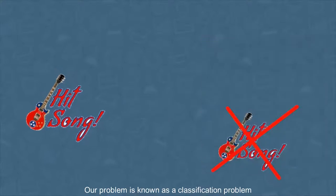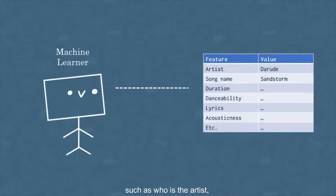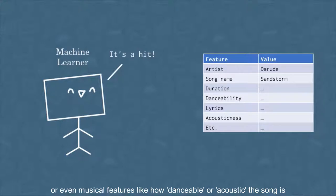Our problem is known as a classification problem, in which the model will simply classify each song as a hit or not. Using machine learning, we consider features of the song such as who's the artist or even musical features like how danceable or acoustic the song is to help determine whether a song will be a hit or a miss.